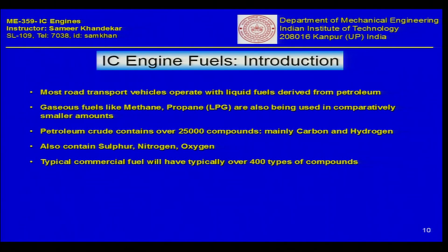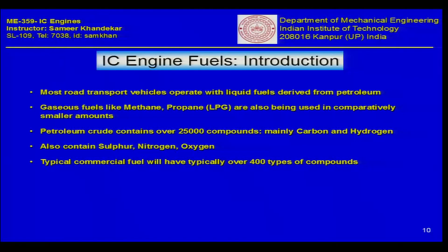Petroleum crude contains a lot of compounds — almost 20,000 to 30,000 different compounds, mainly of carbon and hydrogen. Sulphur, nitrogen, and oxygen are also present. A typical commercial fuel will have about 250 to 400 types of compounds or even more, depending on the refinery it comes from and the grade of that particular fuel.